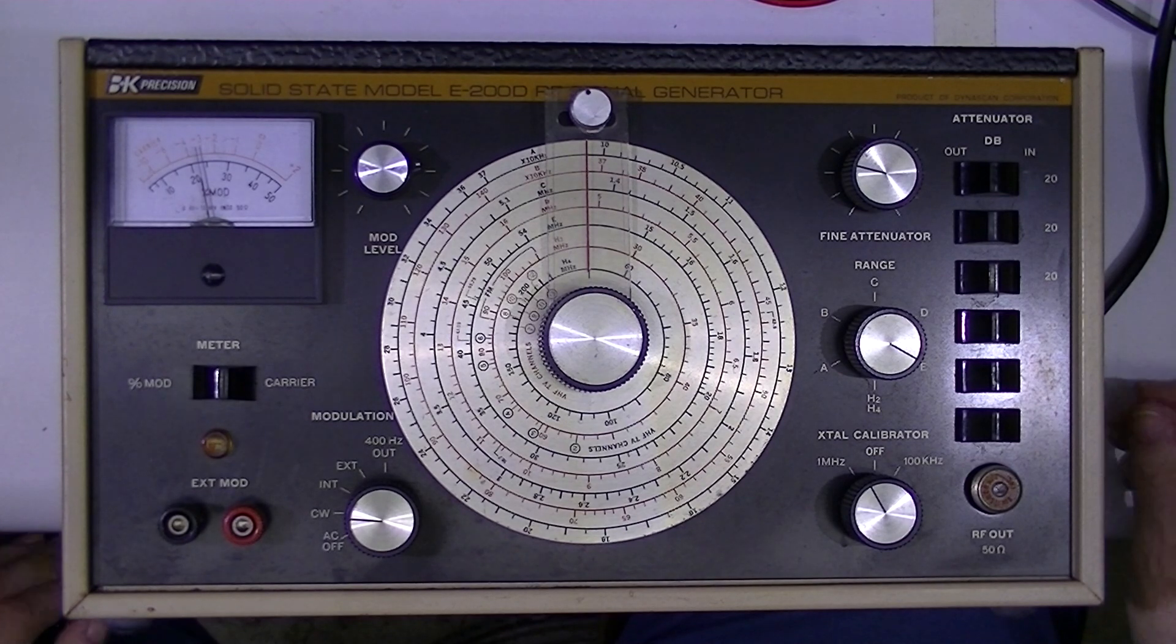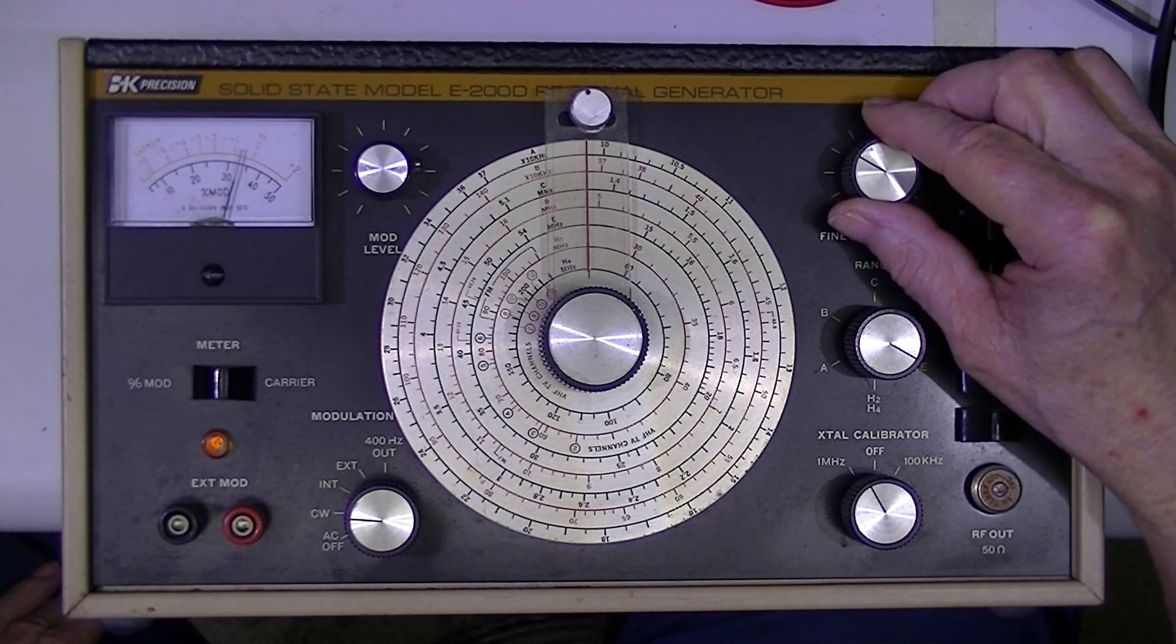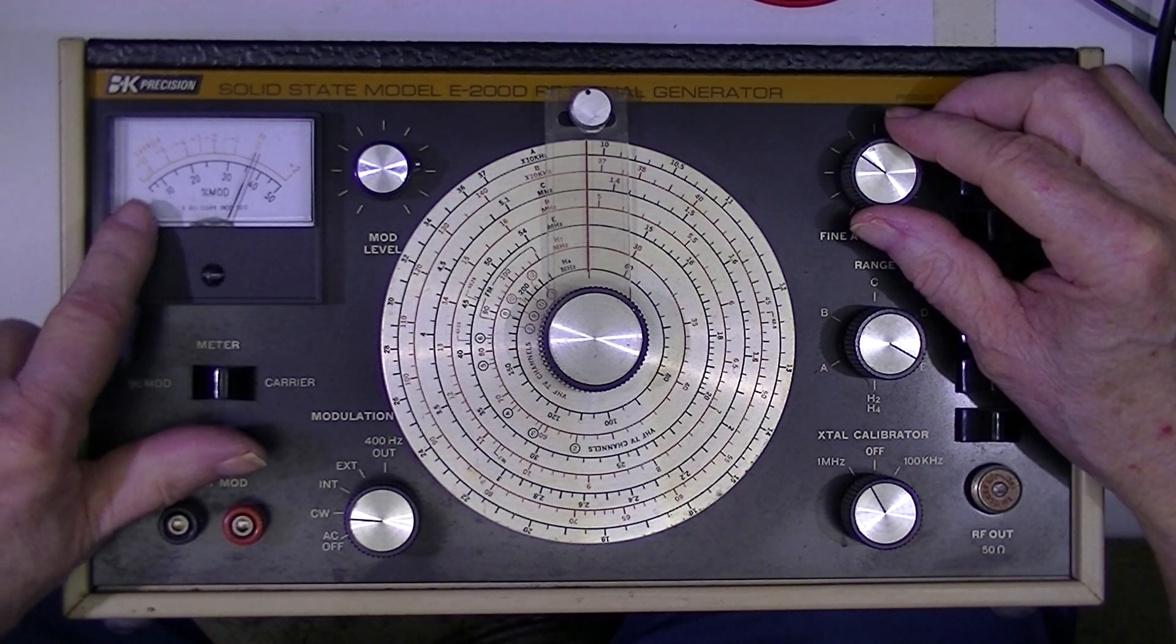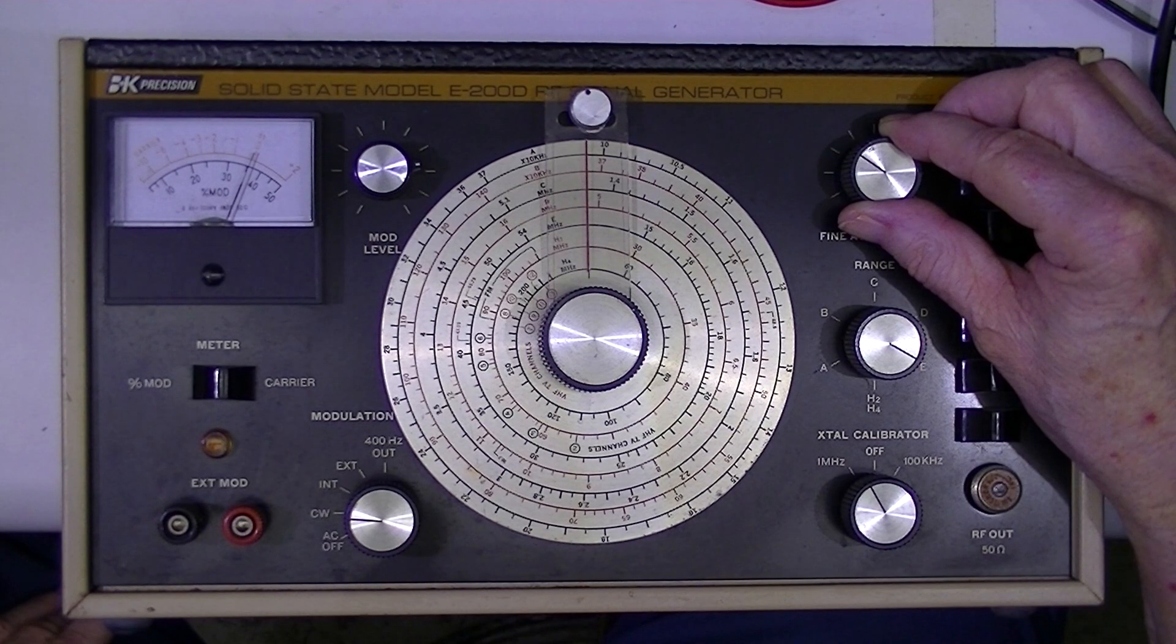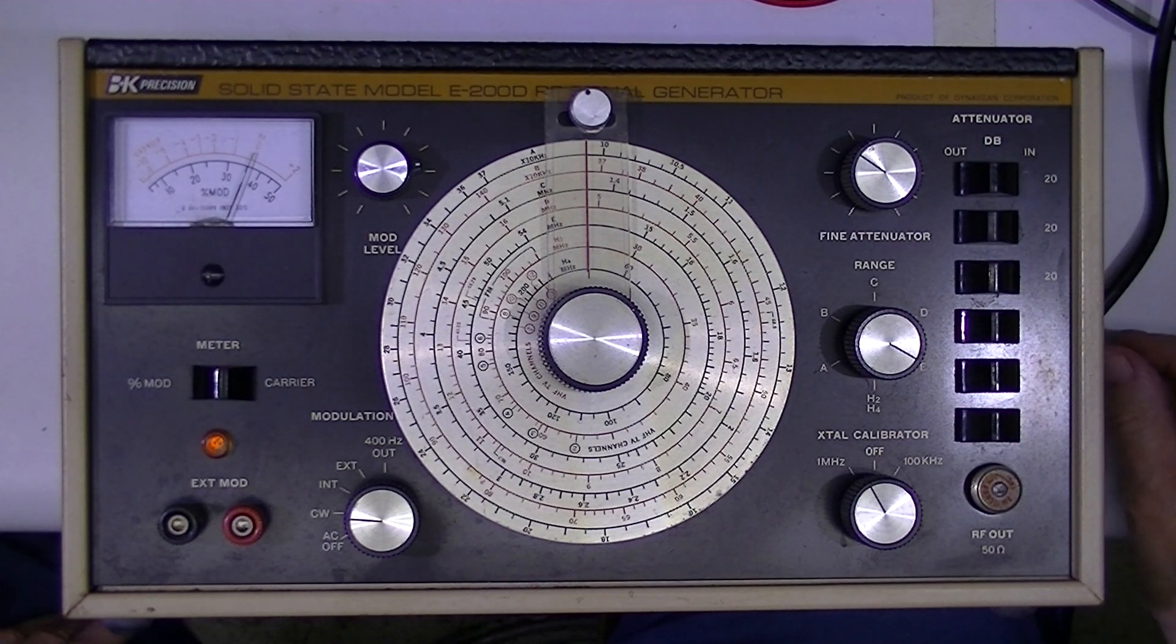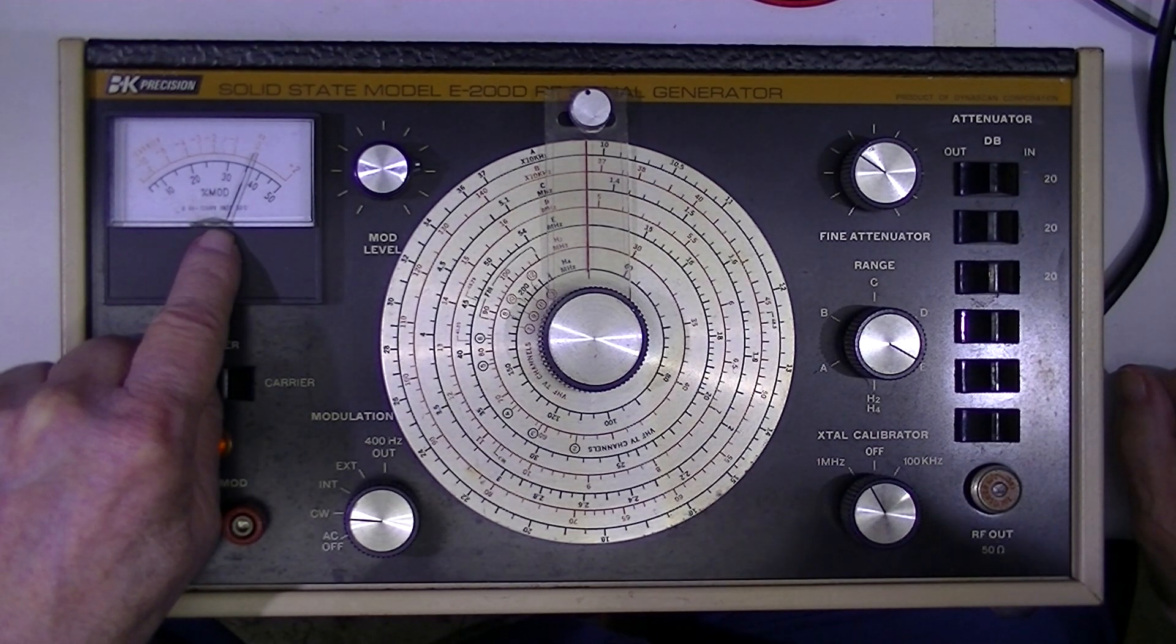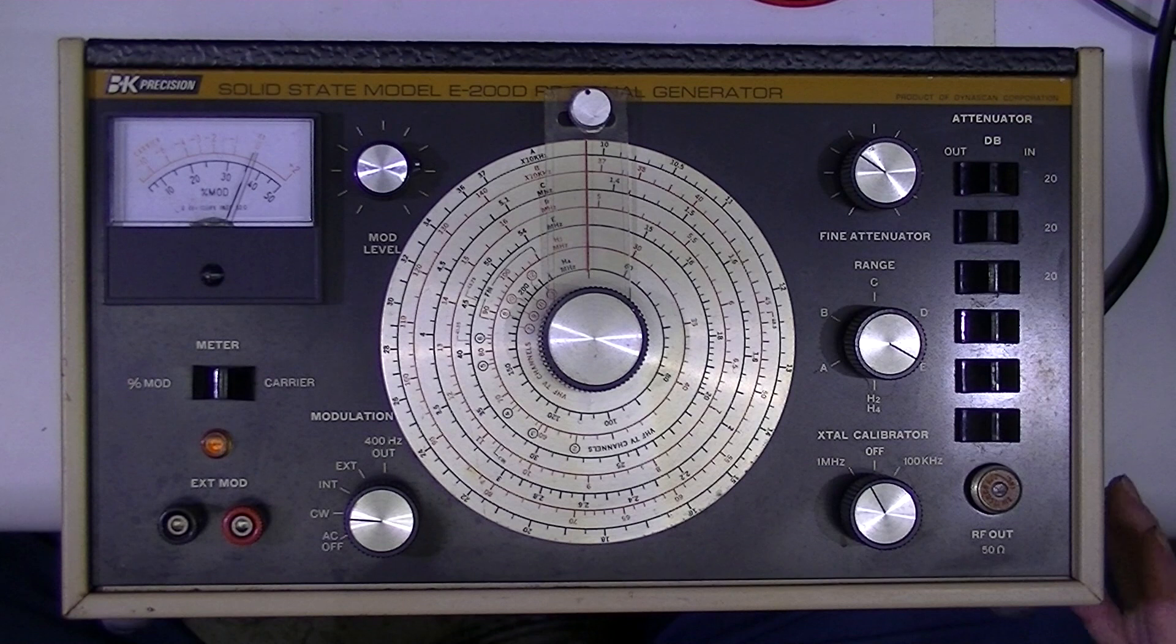The reason I want to use this or resurrect this device is because it has an adjustable output which is no big deal. The meter though is calibrated in decibels and I can set this to provide 0 dB. Now 0 dB is 100 millivolts into 50 ohms. We're talking millivolts here.